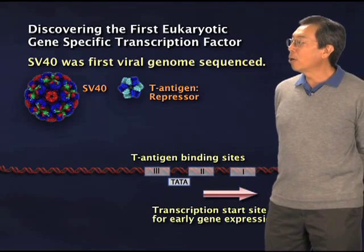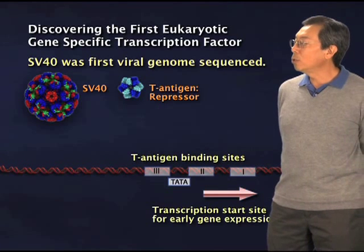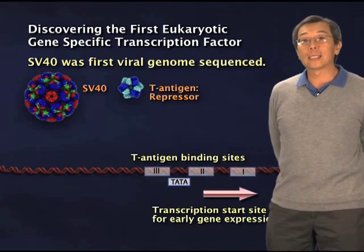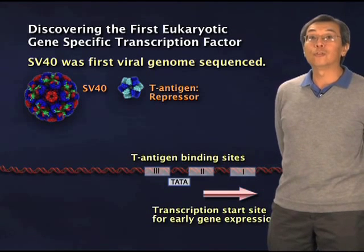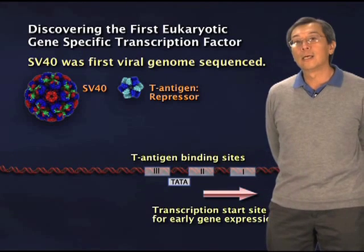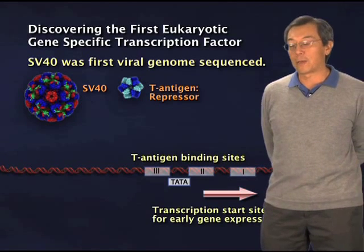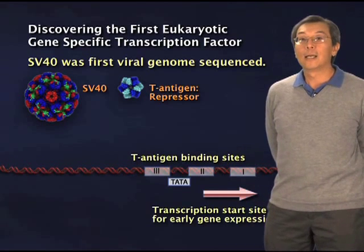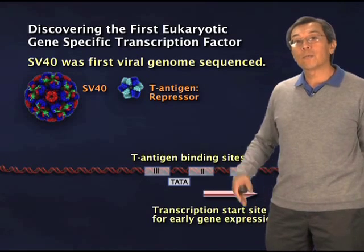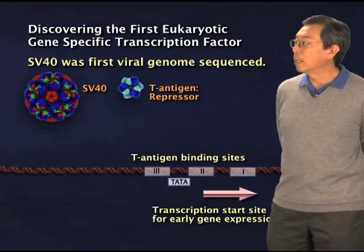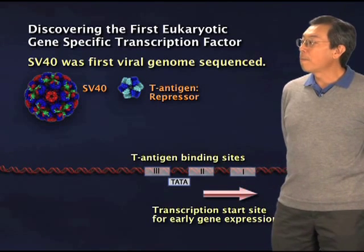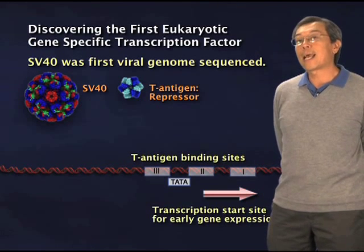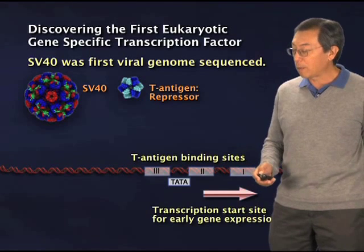One of the genes encoded a protein called the tumor antigen, which turns out to be a transcription factor. This then allowed us to do biochemistry and genetics on the very first eukaryotic transcription factor, which in this case happens to be a repressor. That is, a protein that when it binds to DNA — just as I showed you for the model case — binds through specific protein-DNA interactions, but actually shuts transcription down rather than turning it up.